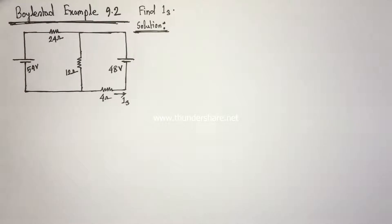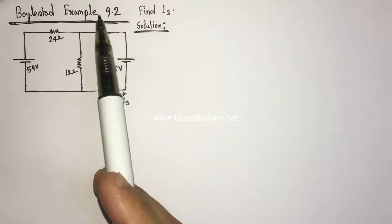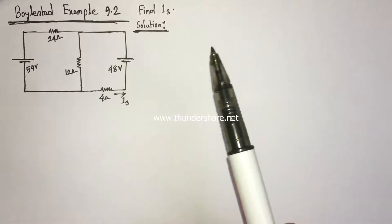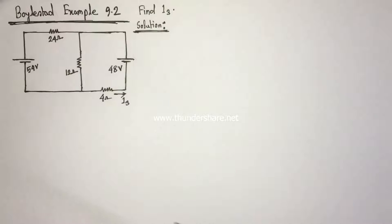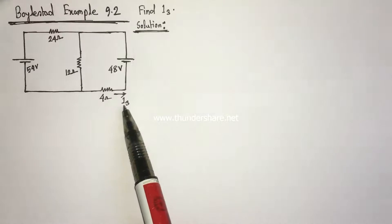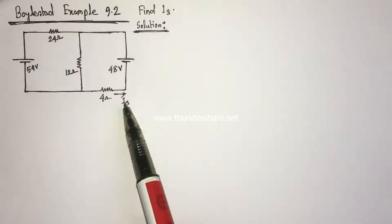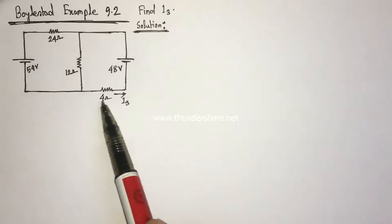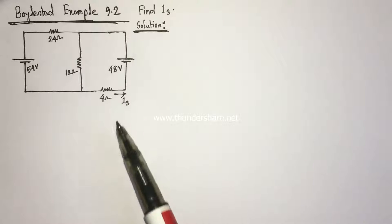Hi viewers, today we will solve example 9.2 from Boyle state. This is a superposition theorem related problem. Here we have to identify current I3 which is flowing through the 4-ohm resistance.